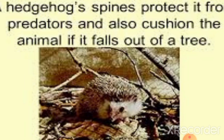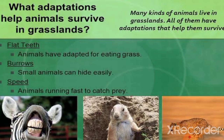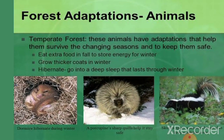Hedgehog spines also help to keep it safe when it falls from a tree. Animals in the grassland have flat teeth to eat grasses, and smaller animals are able to dig burrows where they can hide easily. Animals in the forest region are able to eat extra food to survive for winter, and some are able to hibernate — that is, go through a deep sleep during winter.